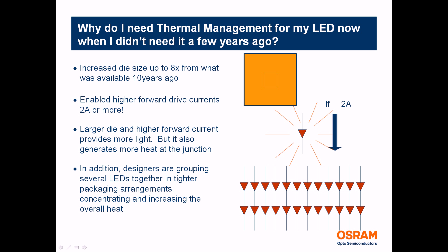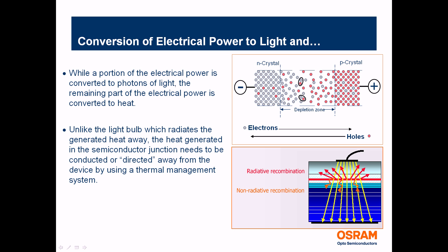That heat needs to be conducted away in the system. Looking at the semiconductor device itself — when power is applied, you have holes and electrons in the semiconductor combining. This recombination can produce a photon of light or generate heat. Radiative recombinations generate the photon of light from the epitaxial layer, while non-radiative recombinations generate heat that needs to be conducted away.